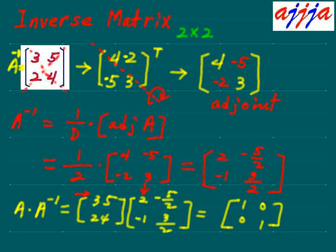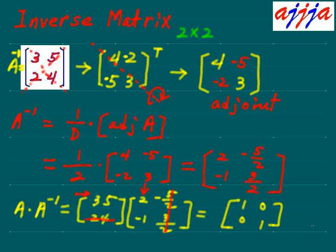Continuing the check: five times negative five-halves plus five times three-halves gives zero. The bottom row also works out correctly, giving one. We are out of time here, so we'll see you at number two — the three-by-three matrix.